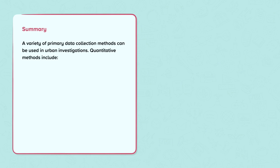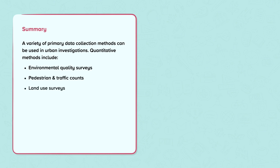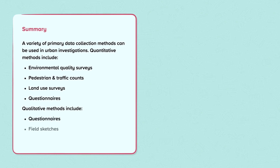Summary: A variety of primary data collection methods can be used in urban investigations. Quantitative methods include environmental quality surveys, pedestrian and traffic counts, land use surveys, and questionnaires. Qualitative methods include questionnaires, field sketches, and photographs.